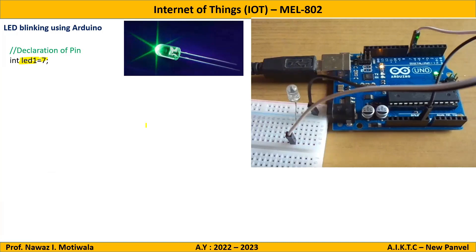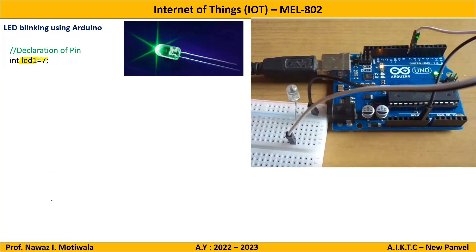Then comes step two — whatever pin you declared in step one, you need to state whether it will be used as an input pin or as an output pin. Step two will be written in void setup. I will write the syntax: pinMode, where p is lowercase and M is uppercase — pinMode(pin, mode).